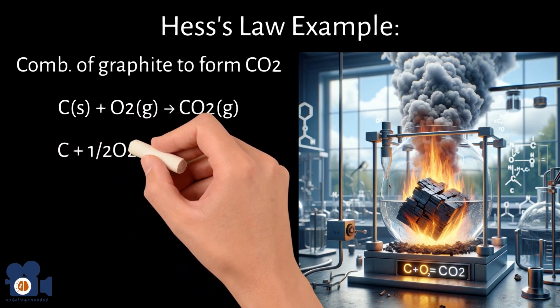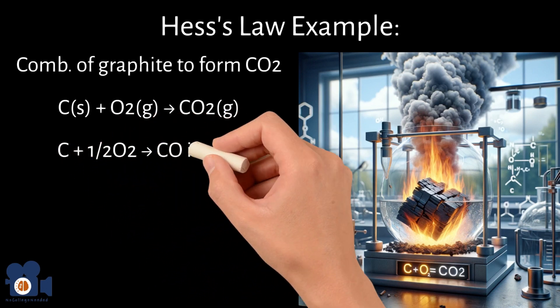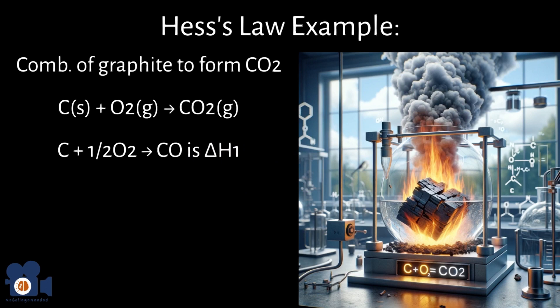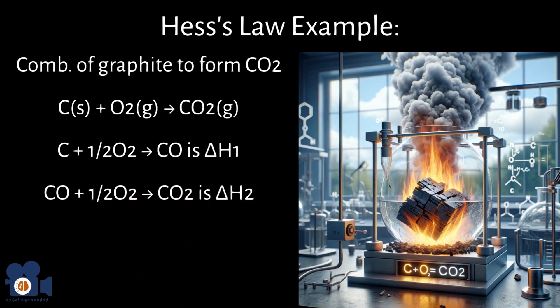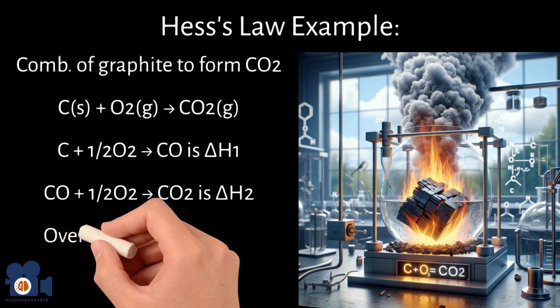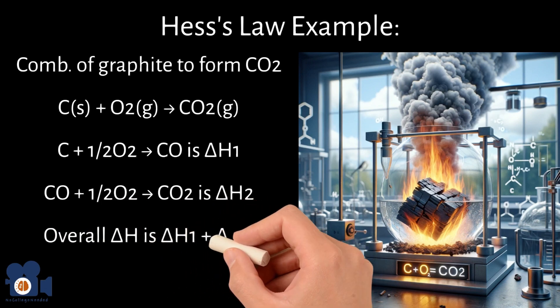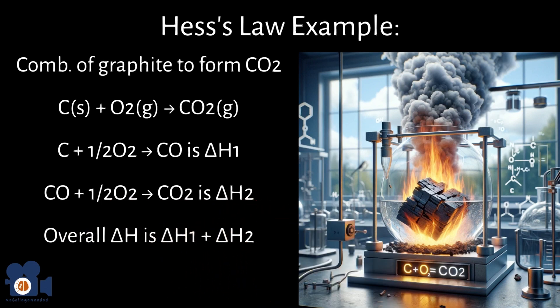C plus one half O2 going to CO is delta H1. CO plus one half O2 going to CO2 is delta H2. The overall reaction is the sum of these two steps and the overall delta H is the sum of delta H1 and delta H2. This approach demonstrates Hess's law since it doesn't matter how CO2 was formed from carbon and oxygen. The total enthalpy change will be the same.